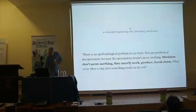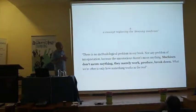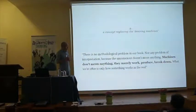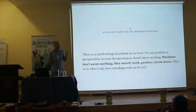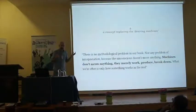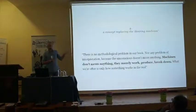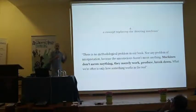Another important thing we can take from this analogy is that assemblages, like desiring machines, don't mean anything. They don't signify something, they don't communicate, they don't reflect — they just produce. They are like machines: they work, they produce, they break down.